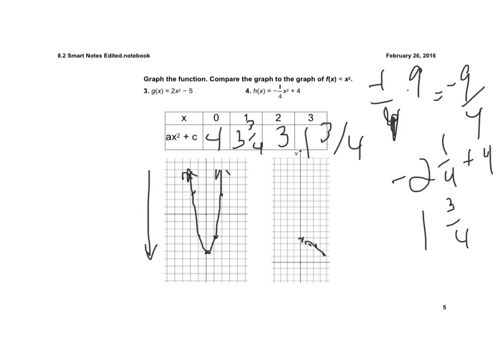And so you can see how it's a pretty wide graph. It does open down, but it's a pretty wide graph. It's wide because the A is less than 1. It's opening down because the A is negative, but do notice that it shifted up to 0, 4 for my vertex.